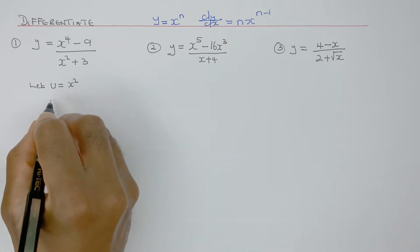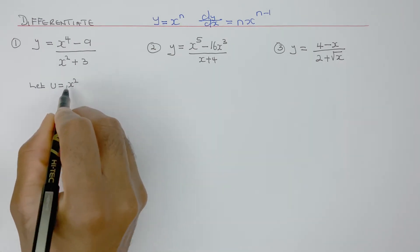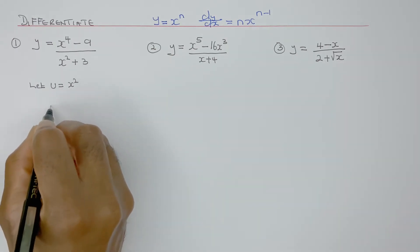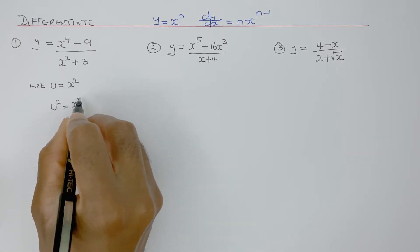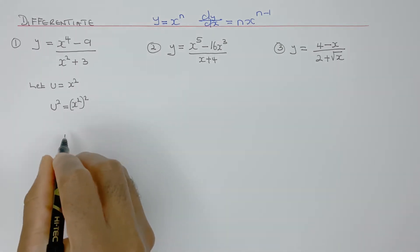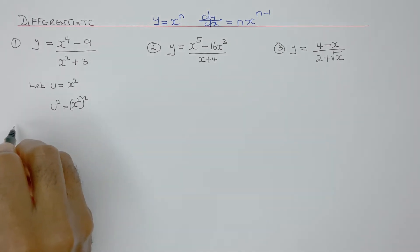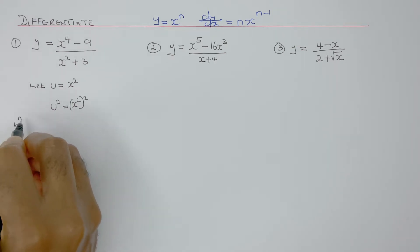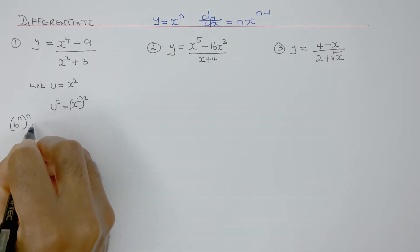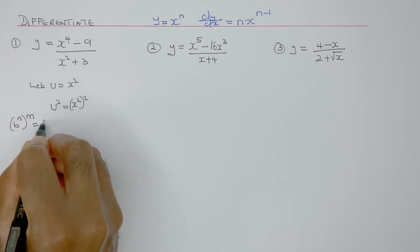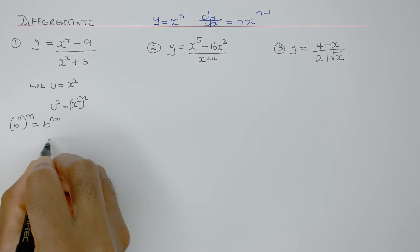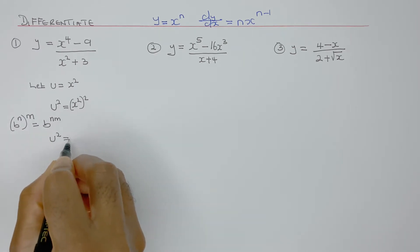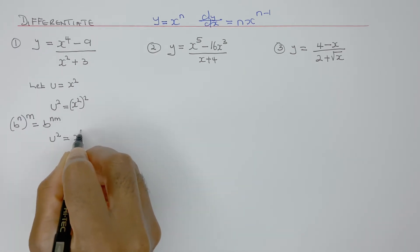Therefore if I square u, I will square that. So u squared will be (x squared) squared. Applying the law of indices — b to the n, all to the power of m, equals b to the nm — therefore u squared equals x to the power 4, since 2 times 2 is 4.